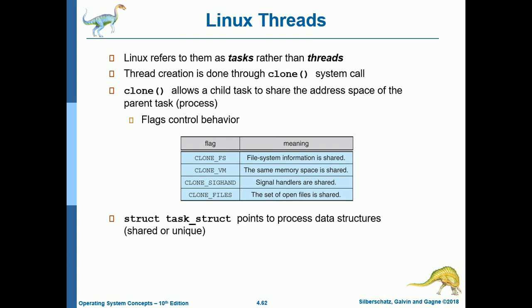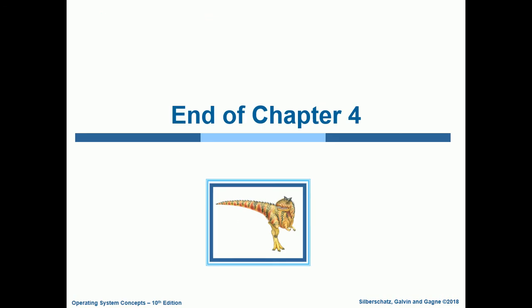Linux refers to threads as tasks rather than threads. Thread creation is done through the clone system call, which allows a child task to share the address space of the parent task or process. Flag controls include: CLONE_FS (file system information is shared), CLONE_VM (same memory space is shared), CLONE_SIGHAND (signal handlers are shared), and CLONE_FILES (the set of open files is shared). The task_struct points to process data structures, which may be shared or unique.